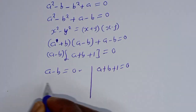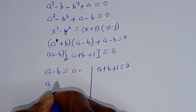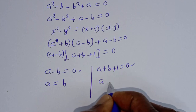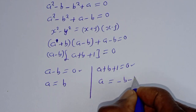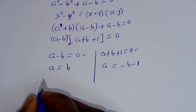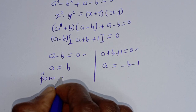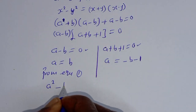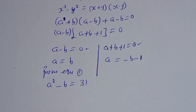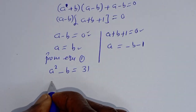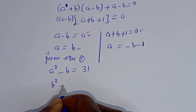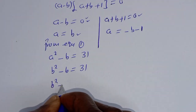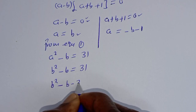From the first case, A minus B equals 0 means A equals B. Substituting into equation 1 — A squared minus B equals 31 — and since A equals B, we get B squared minus B equals 31. Then B squared minus B minus 31 equals 0.